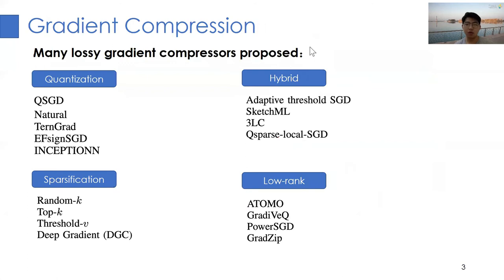To alleviate this issue, researchers have proposed various gradient compression techniques to reduce the data volume during communication. We have classified most of the compressors into four categories, namely quantization, sparsification, hybrid, and low rank.